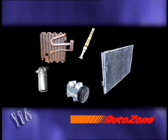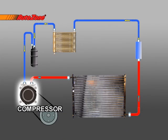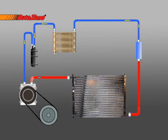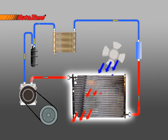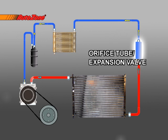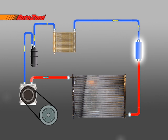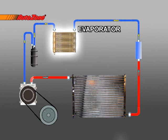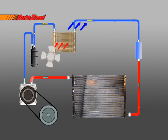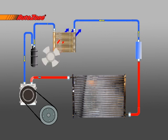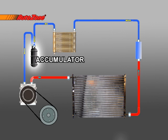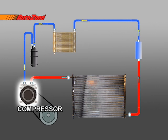Now that we've shown you all the parts, let's explain how it works. The compressor pumps the refrigerant under pressure throughout the system. After leaving the compressor, the refrigerant enters the condenser where it transfers heat to the outside air. Next, an orifice tube or expansion valve transforms the refrigerant into a cold gas. That cold gas passes through the evaporator, absorbing heat from inside the vehicle, while a fan blows across the evaporator fins chilling the air entering the passenger area. The refrigerant then passes through a dryer to filter moisture before returning to the compressor to begin the process again.